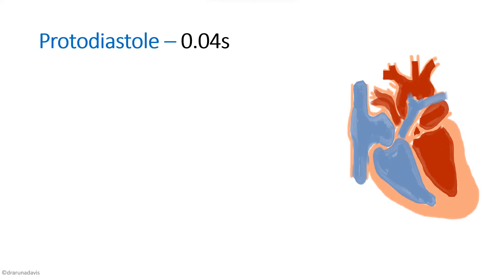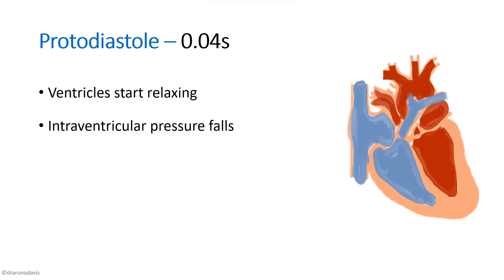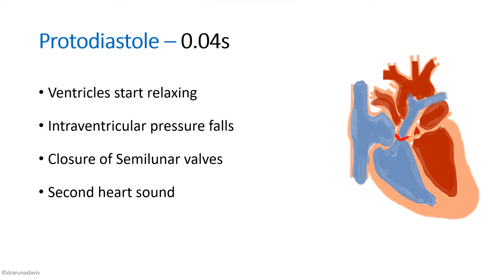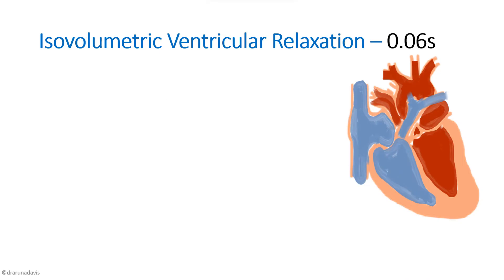Next is protodiastole, in which the ventricles begin relaxing after the ejection phase. Intraventricular pressure falls, causing closure of the semilunar valves. Valve closure produces a heart sound — the second heart sound, S2 — which occurs during protodiastole due to semilunar valve closure.